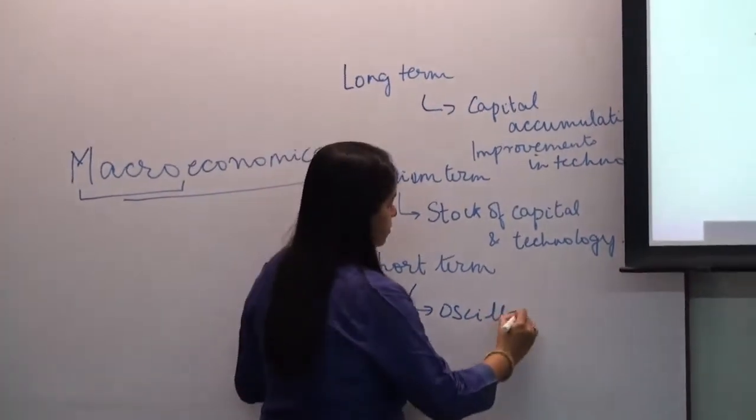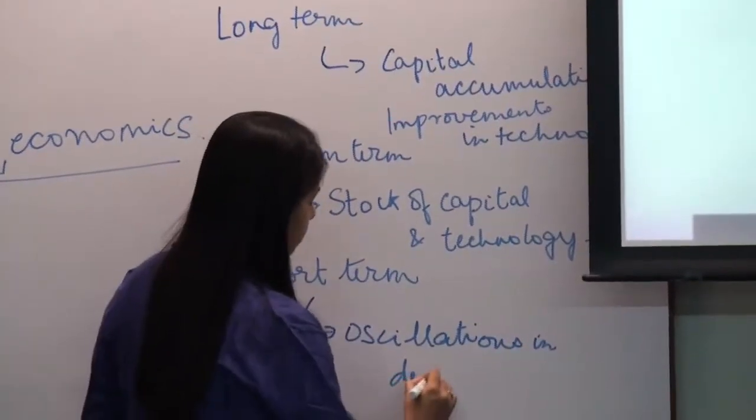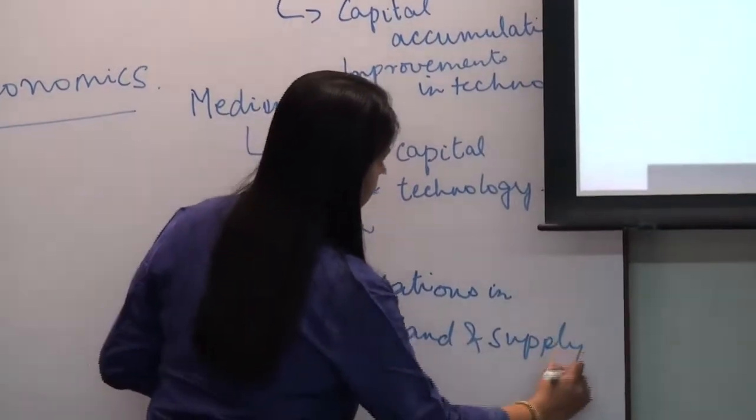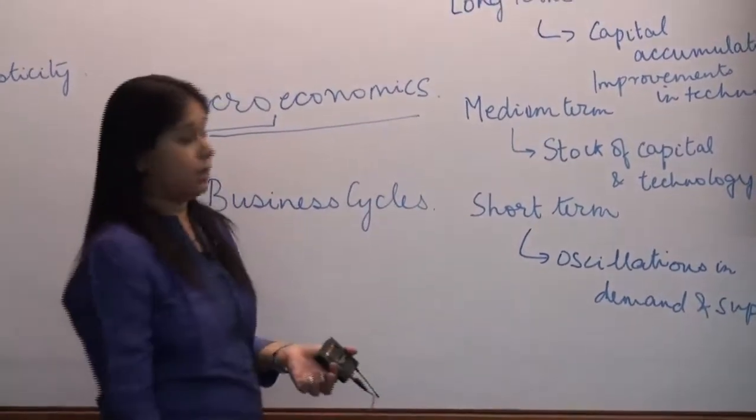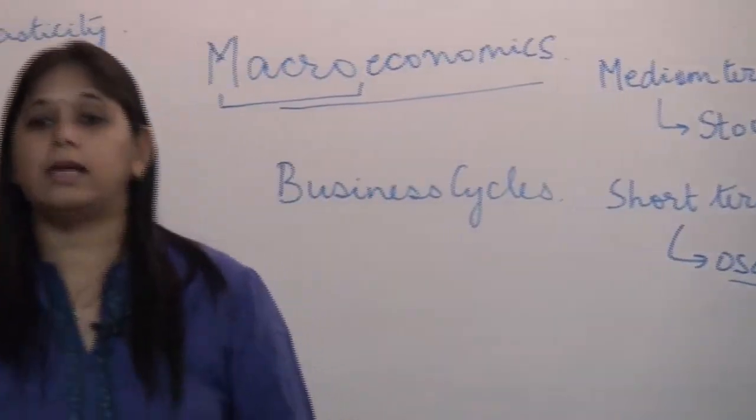In the short term we talk about oscillations in demand and supply. The firm provides a certain output, which depends on its market share, its consumers, and demand from their side. It also considers supply — the level of capacity utilization and how it satisfies market demand. These short-term oscillations or fluctuations give rise to a phenomenon known as business cycles.